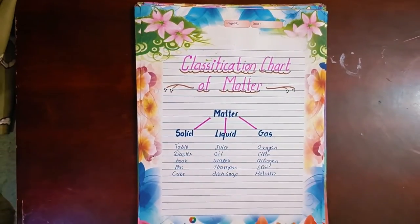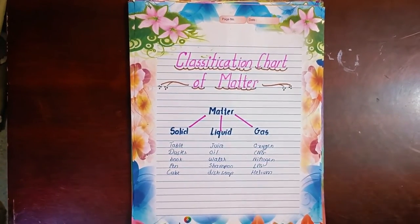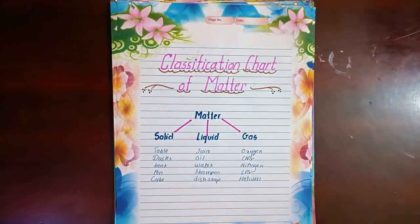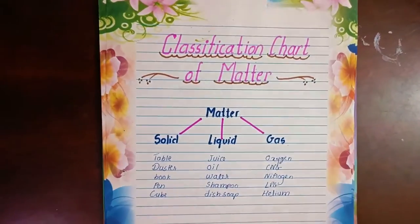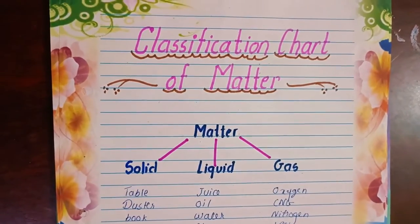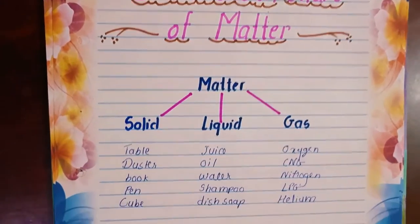First is the classification chart of matter — solid, liquid, and gas.